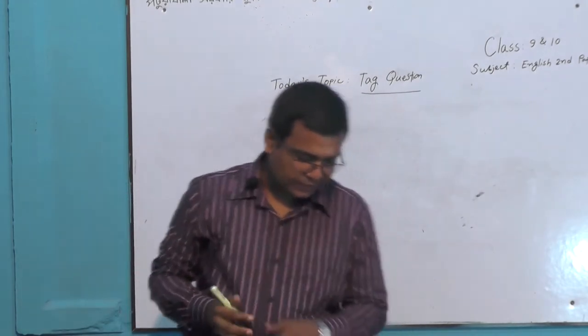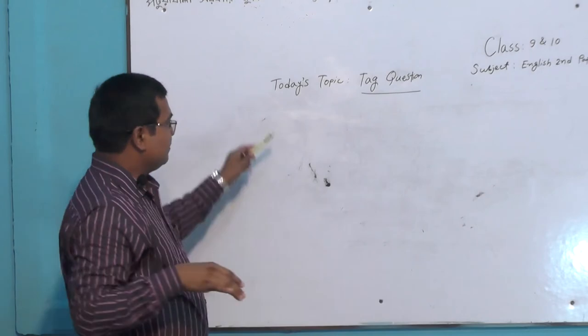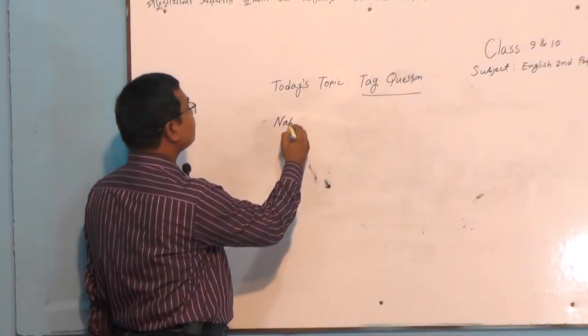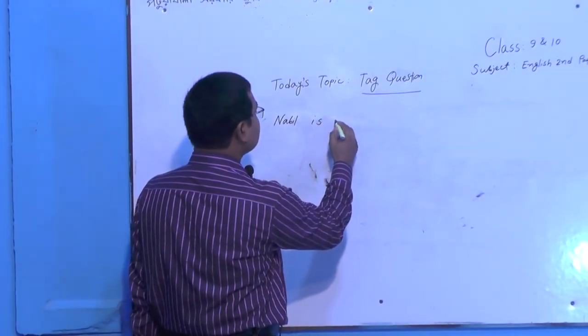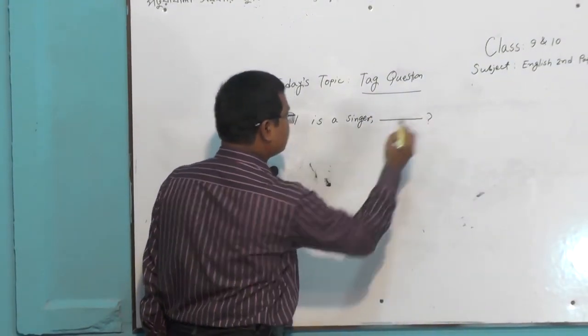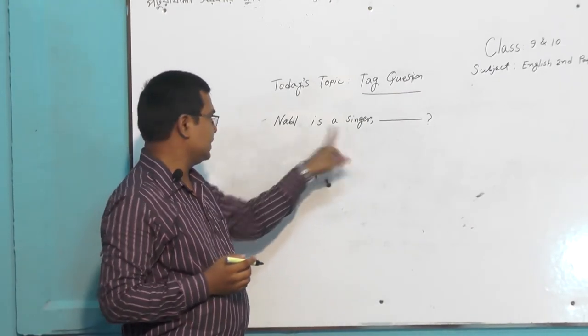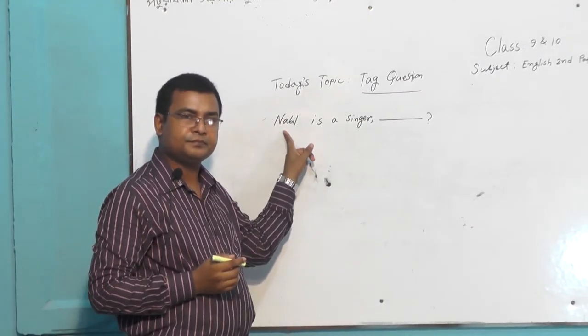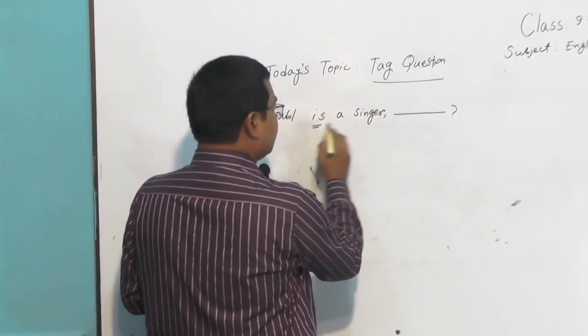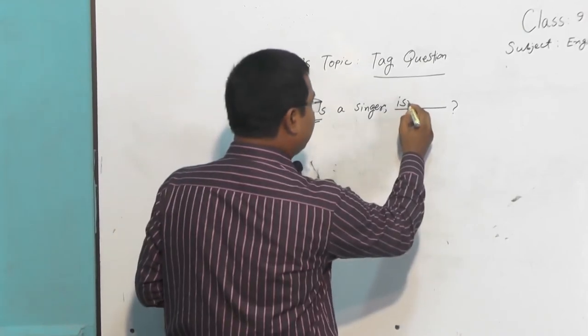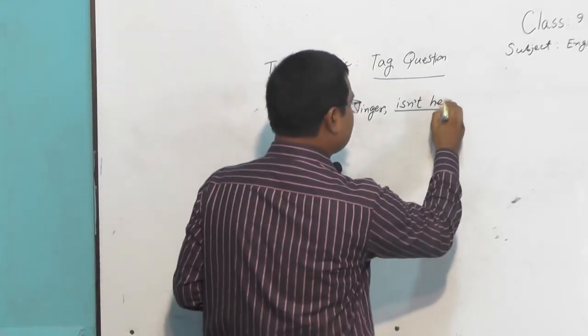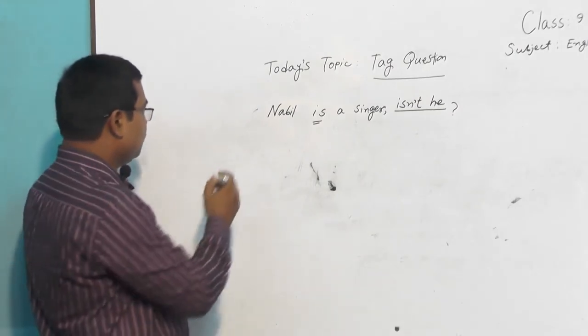Are you writing? I advise you to write the sentences in your exercise books. Look, here I have written 'Nabil is a singer'. It is noun. In case of noun we will use pronoun here, and here is 'is' and there is no 'not', so 'not' will be added. 'Isn't', then pronoun of Nabil: 'isn't he'.